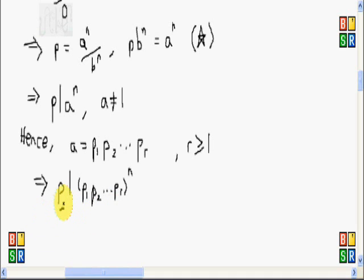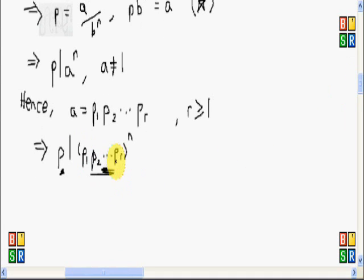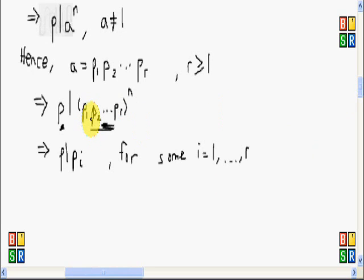Well, here we have p divides a product of prime numbers from p sub 1 up to p sub r. So therefore, for at least one prime number there, p divides a p sub i for some i from 1 to r. We don't know what that p sub i is, but we know that p divides a prime number from p sub 1 up to p sub r.